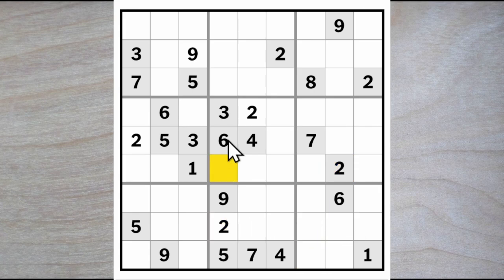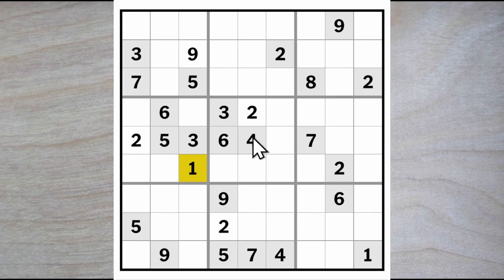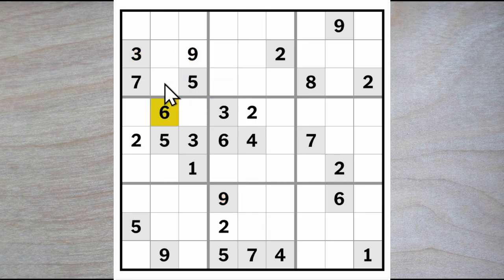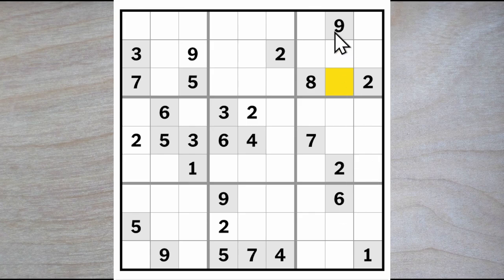One of these must be a 2. We have 1, 4, 7, 8 here — 7, 8 blocks here, giving a 1, 4, and 1, 4 blocks here leaving a 7, 8. There is synergy: we have a 3, 6, and 9 blocking here, and a 3, 9, and 6 blocking here, so these two squares must be a 1 and 4 pair. Now 6 and 9 can't go in the remaining square, so it must be a 3, and these two must be a 6 and a 9.